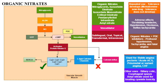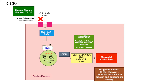Organic nitrates are used for stable angina pectoris, acute coronary syndrome, Prinzmetal or variant angina, and congestive heart failure. Other uses include biliary colic and esophageal spasm, since they relieve spasm. Amyl nitrate is also used for treating cyanide toxicity.